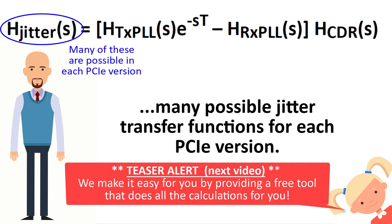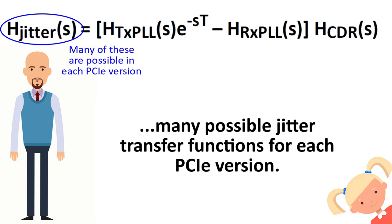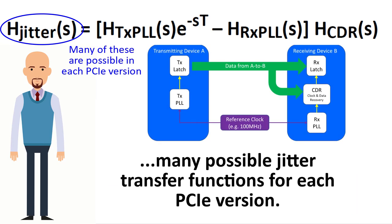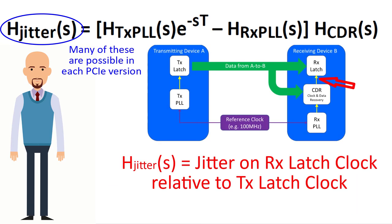In other words, each PCIe version contains many models to describe the jitter of the clock on the receiver latch relative to the clock on the transmit latch.